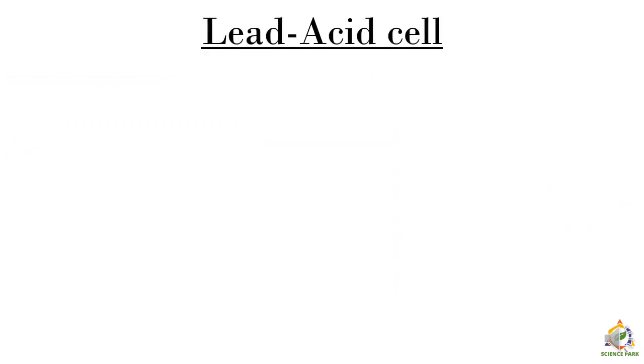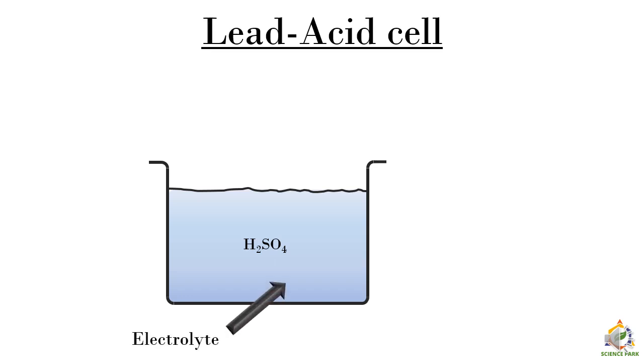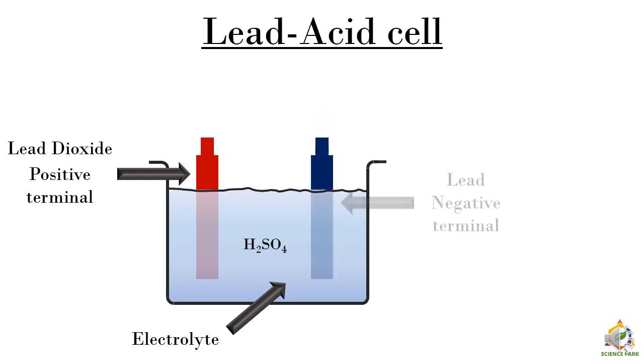The second type of cell we are going to see is lead acid cell. In a container we take a chemical, sulfuric acid, which is also electrolyte for this cell. And we have two terminals. One is lead dioxide which is the positive terminal and another is made up of lead which is negative terminal. And we connect these terminals to a load.